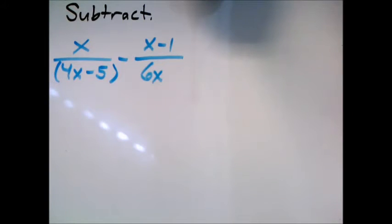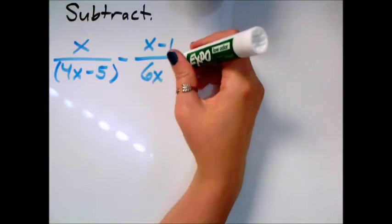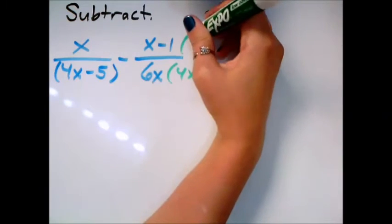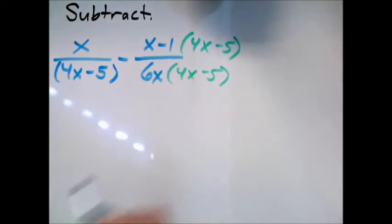So both sides, I want to say, if I want the denominator to have a 6x and a 4x minus 5, this one needs a 4x minus 5, and this one needs a 6x.